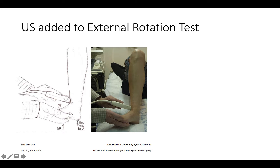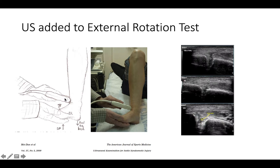Here's an example of the test itself. The person is either sitting or in a supine position, and then you rotate the ankle into external rotation. Here they're measuring gapping with an ultrasound probe — you can see the distance in this syndesmosis, and wide gapping would indicate a sprain.